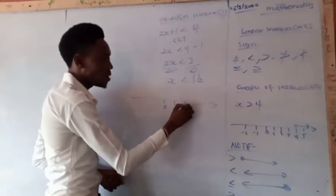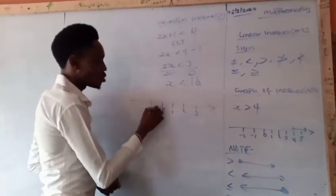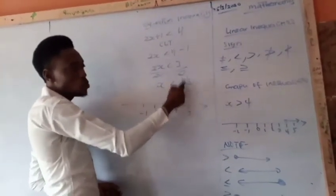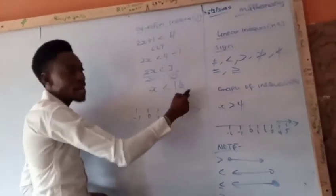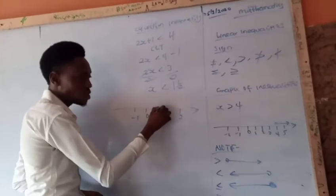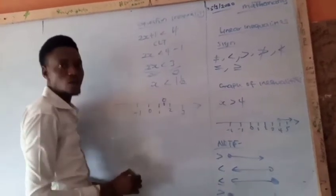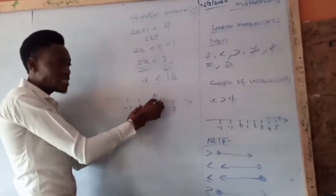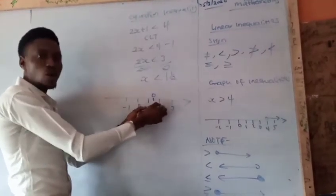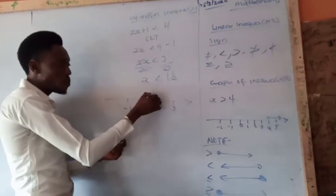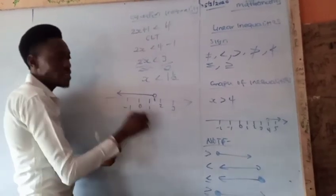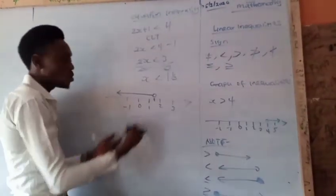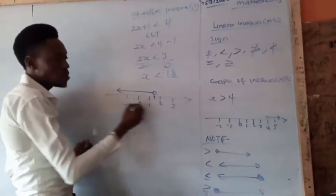After solving, we plot it on the number line with points 0, 1, 2, 3, minus 1, and so on. Since s is less than 1 and a half — and 1 will be less than 1 and a half, 0 will be less than 1 and a half — the arrow points to the left-hand side. The arrow for 'less than' always points left.